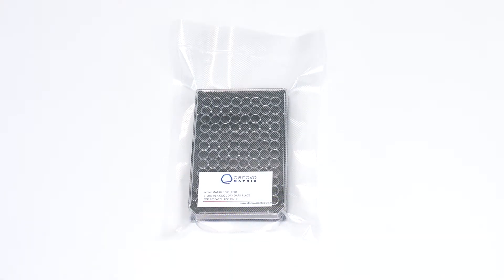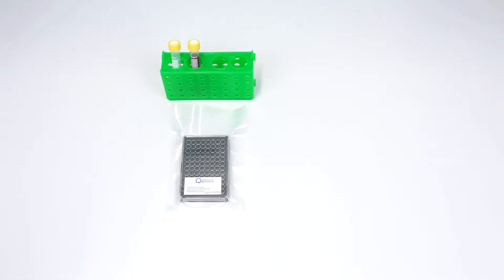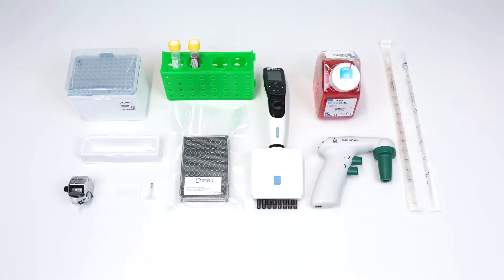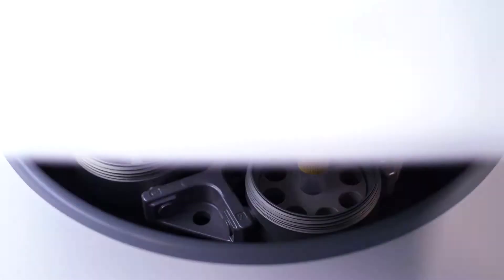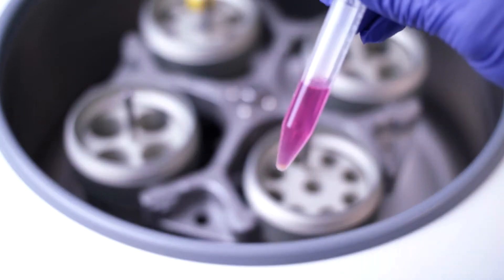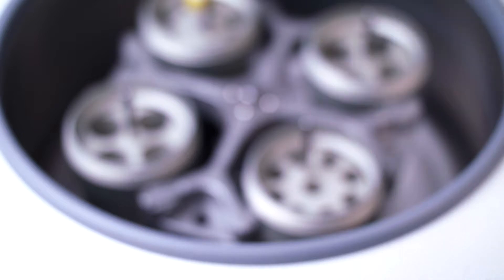To use the screen matrix, we recommend the following standard cell culture instruments. Using the screen matrix is simple and doesn't require protocol steps outside of normal cell seeding practice. Simply trypsinize your cells according to your usual dissociation protocol and centrifuge down the cell pellet.